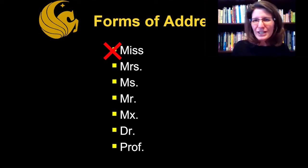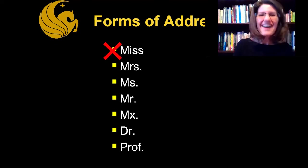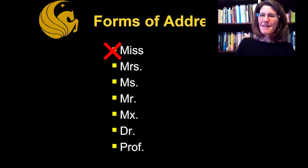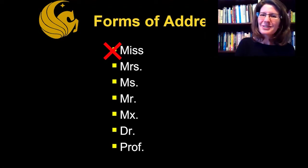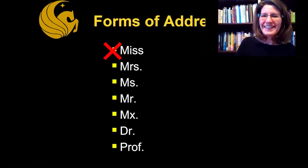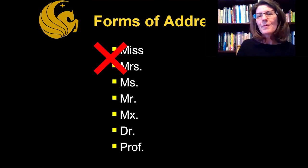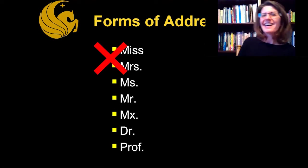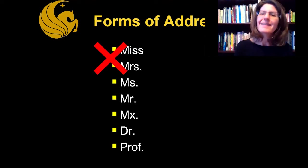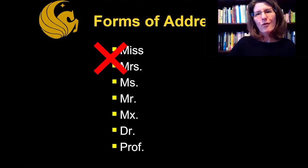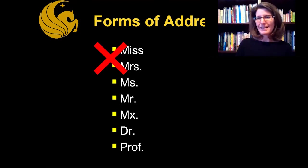Back around the 1970s, a new form of address became really popular: 'Ms.' — M-S. There was even a magazine started by Gloria Steinem and friends to talk about women's issues of the day. Ms. is what we use instead of Mrs. It's safer to say 'Ms.' because it doesn't address the person's relationship with a man — it addresses them as an individual. This is for an adult feminine individual in our society.